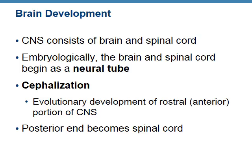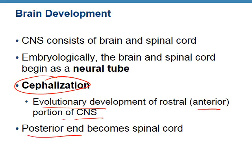Before we start talking about the different regions of the brain, we need to look at brain development, and I just wanted you to be familiar with these terms in case they came up again. So we see cephalization — this is the evolutionary development of the anterior portion of the central nervous system, and then the posterior end becomes the spinal cord.